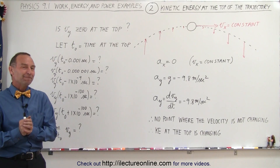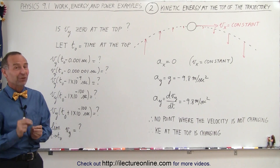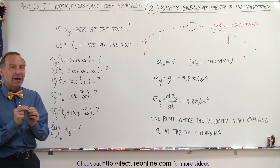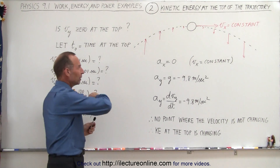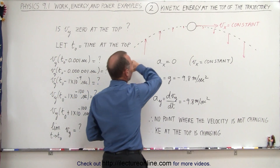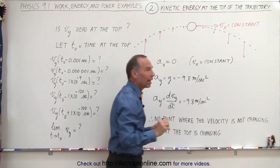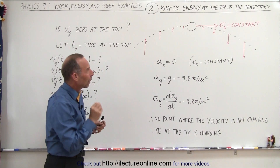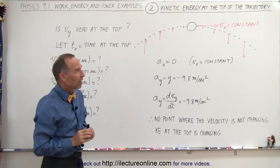Welcome to iLectronLine. Here is a very interesting example: what happens at the top of a trajectory? For example, an object is being thrown up at an angle, and by the time it reaches the very top, what is actually going on there? What is happening with the velocity of the object and what is happening with the kinetic energy of the object?